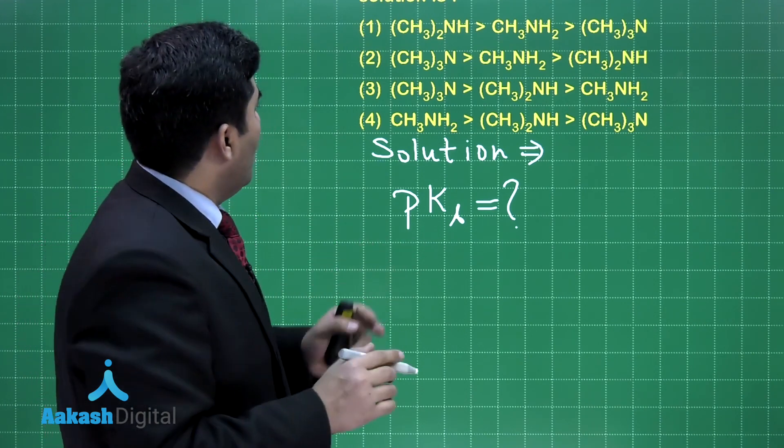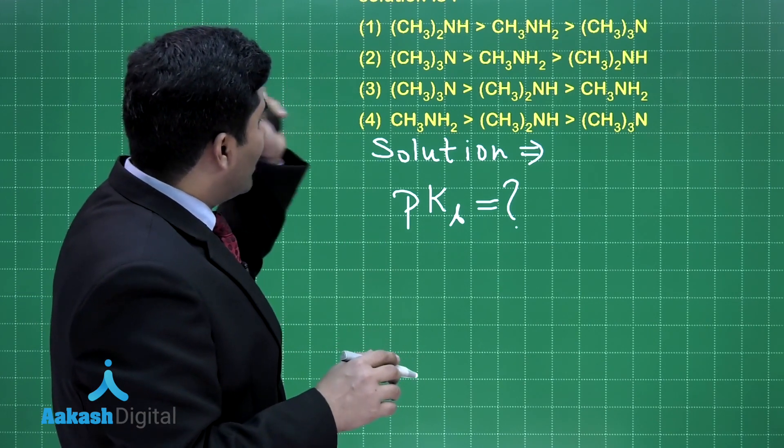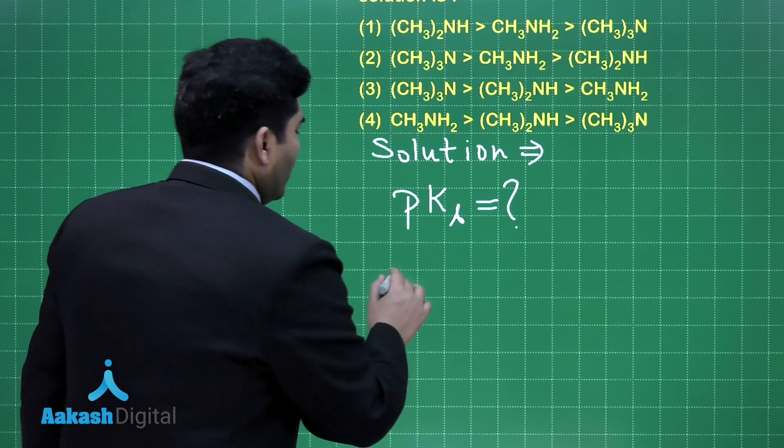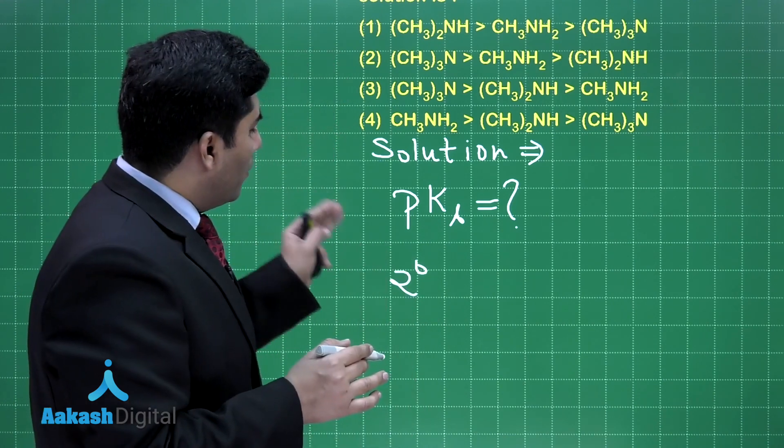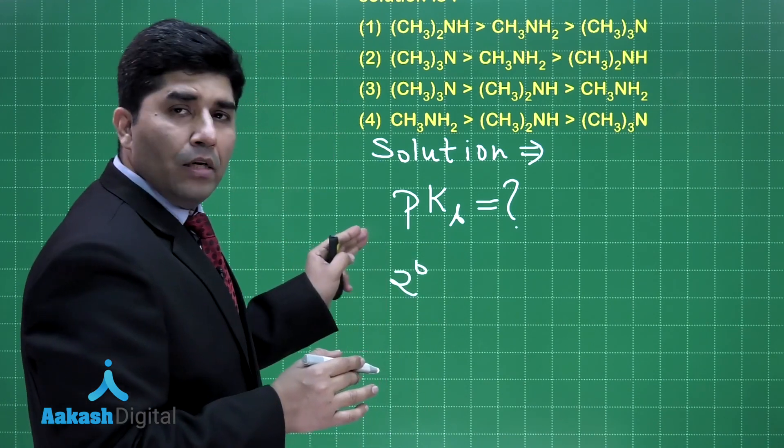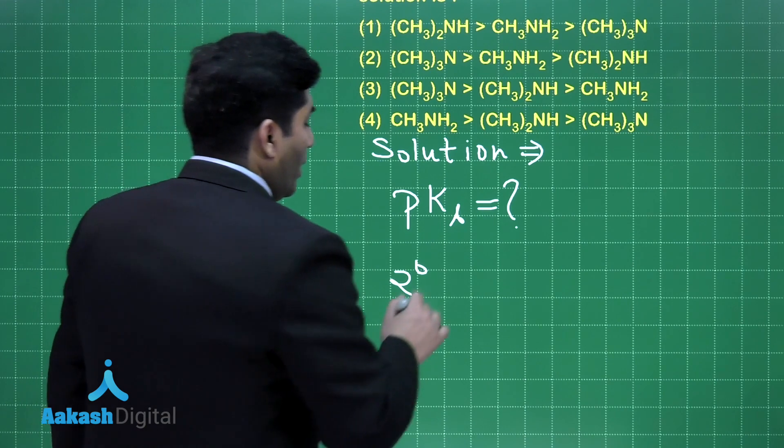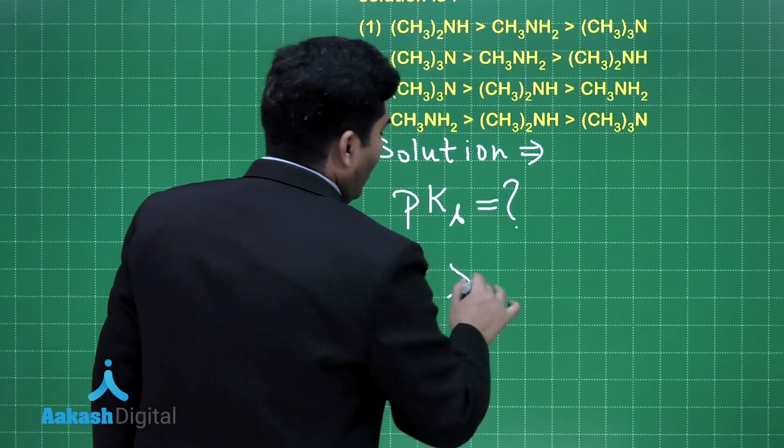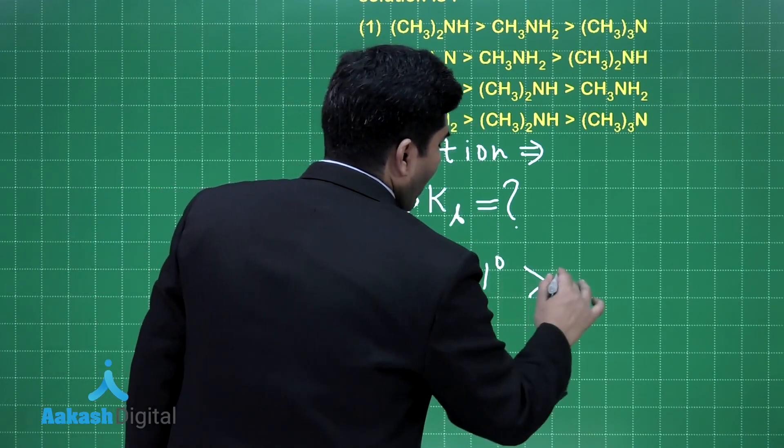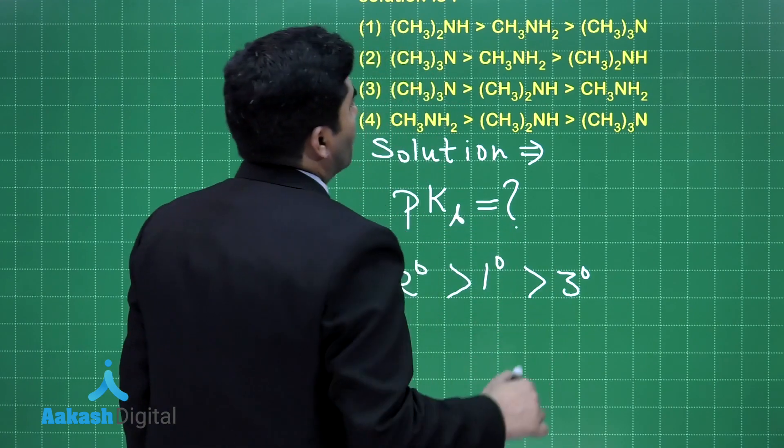And according to NCERT, when methyl group is there, then secondary amine will be most basic. And then in the case of methyl, it will be primary and then tertiary. Right?